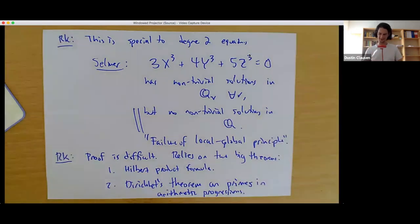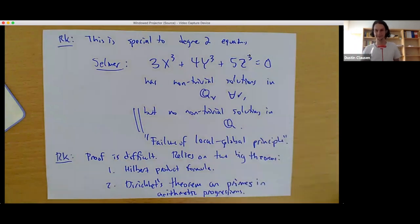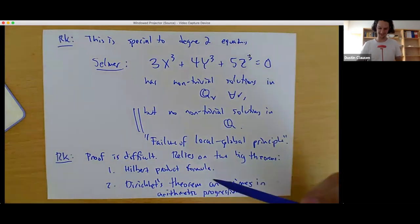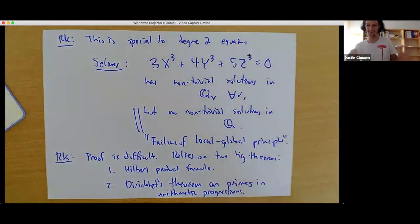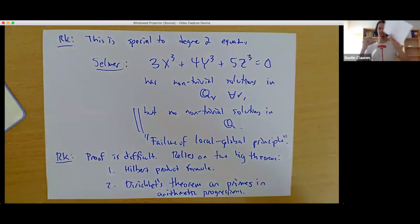It should be not quite obvious how you're ever going to use these two theorems to prove a local-global principle. You have to really look into the intricate nature of the argument to see why these two ingredients could possibly be used to produce a rational solution to an equation.